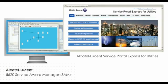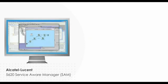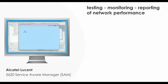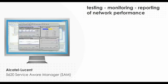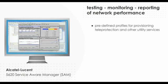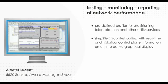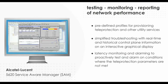The Alcatel-Lucent 5620 Service Aware Manager and Service Portal Express for utilities allow utilities to easily provision the paths for desired latency as well as guaranteeing path symmetry. The 5620 SAM management portfolio also allows for testing, monitoring and reporting of network performance. It includes the following specific features: pre-defined profiles for provisioning teleprotection and other utility services; simplified troubleshooting with real-time and historical control plane information on an interactive graphical display; latency monitoring and alarming to proactively test and alarm on conditions where the teleprotection parameters are not met; and easy creation of performance reports.